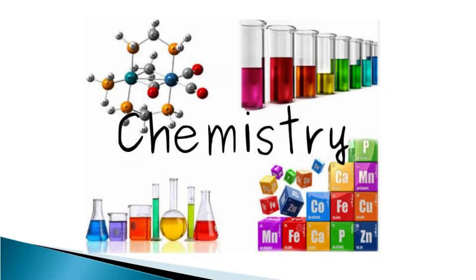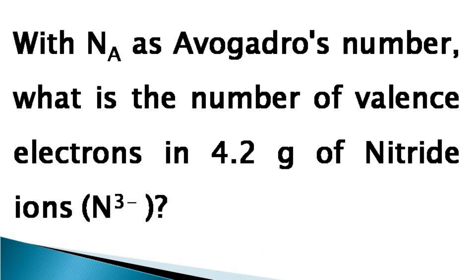Hello and welcome to chemistry. Today we have got a new problem. The problem goes as: with Na as Avogadro's number, what is the number of valence electrons in 4.2 grams of nitride ions N³⁻?